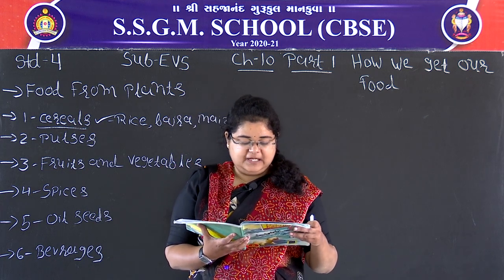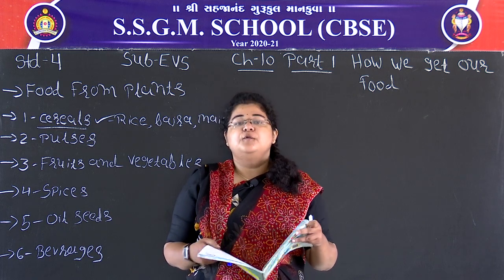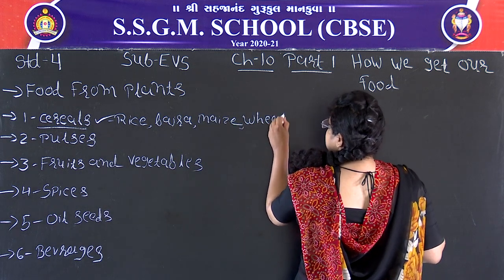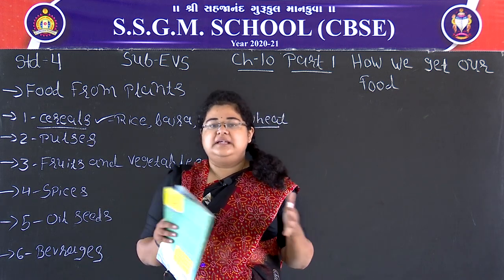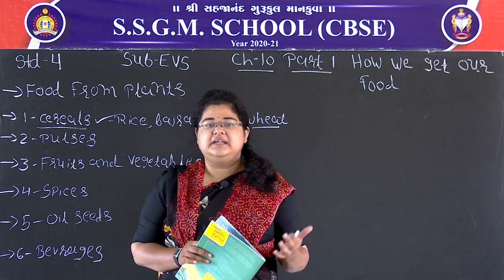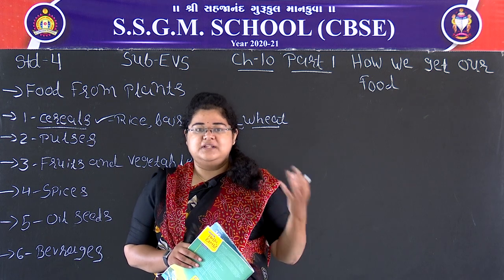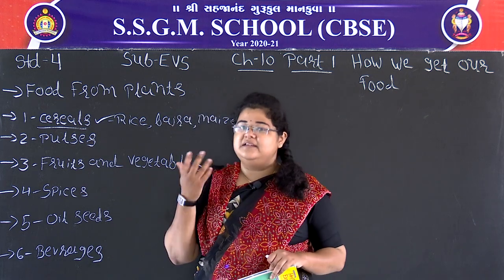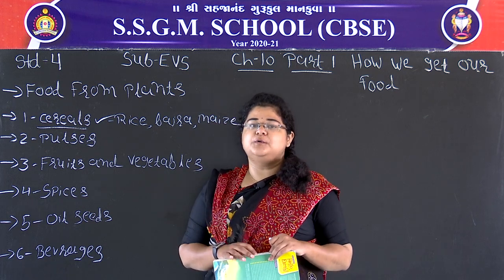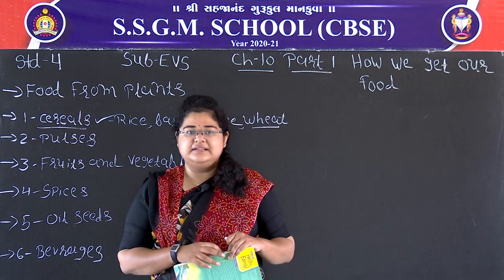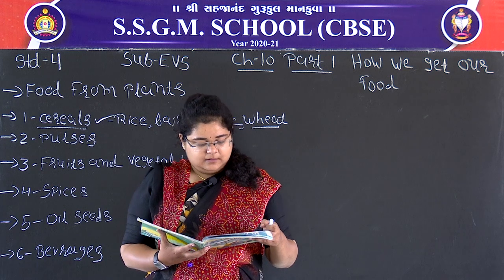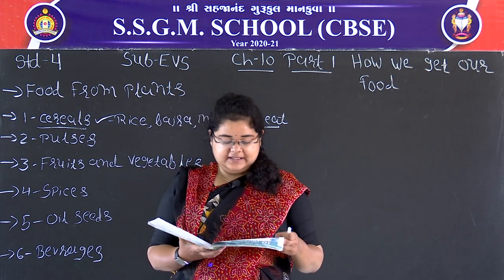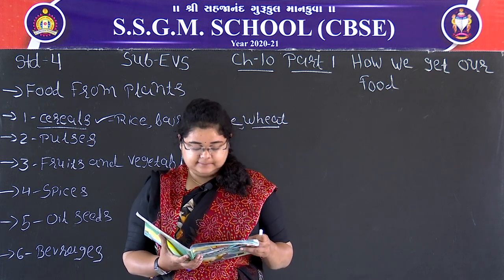Wheat is commonly ground into flour and used to make rotis. Wheat — गेहूं — is what we use for our main lunch food; roti is made from wheat flour. We also use wheat to make bread and naan. So wheat falls into the cereals category.